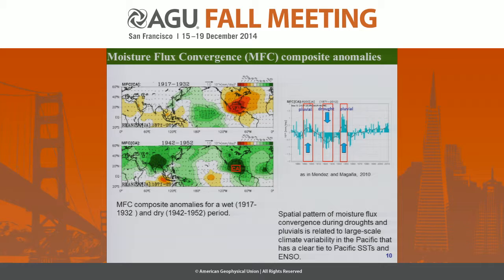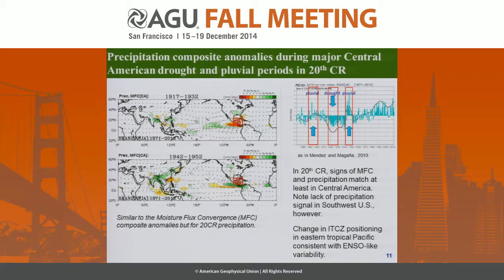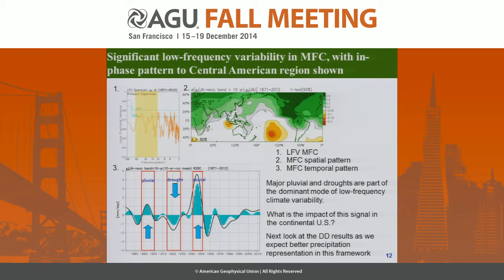Just to diagnose the proper signal of the moisture flux convergence, I'm going to repeat the same analysis but now using the precipitation from the 20th century analysis. The time series on the right is over the same domain, and you can still see the pluvial, the drought, and the pluvial periods. However, instead of using just the composite analysis, I had to be sure that this variability is part of the dominant mode of variability in the entire dataset. So now we are going to characterize the low-frequency variability for the entire dataset using the MTM-SVD of the moisture flux convergence.